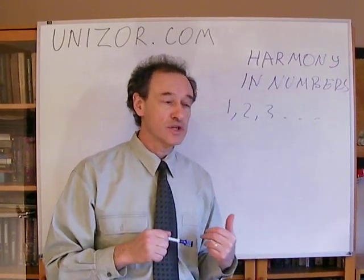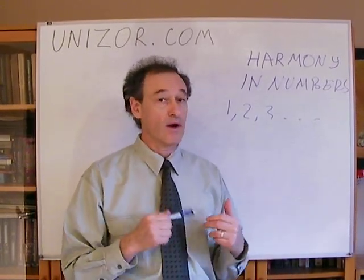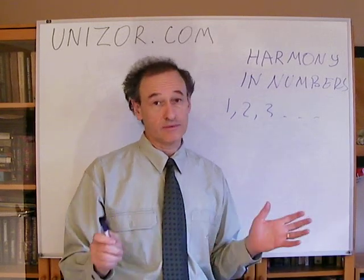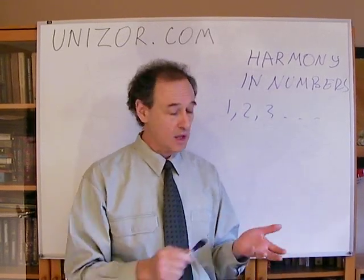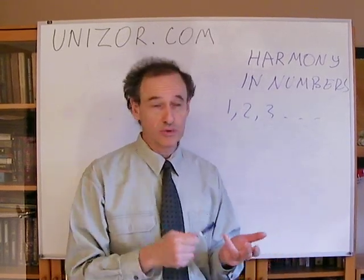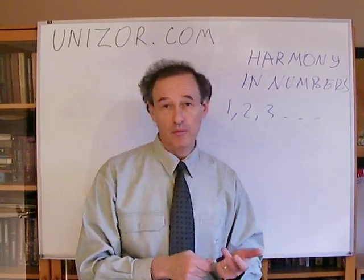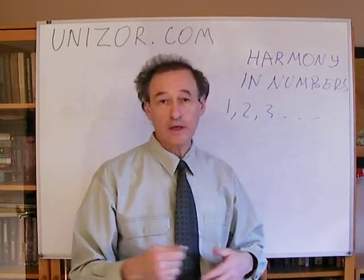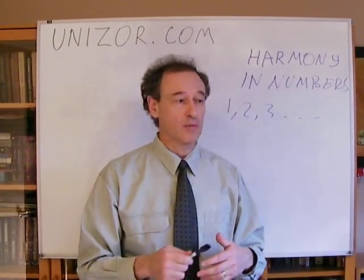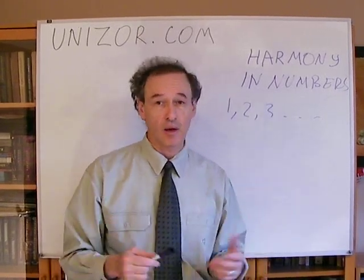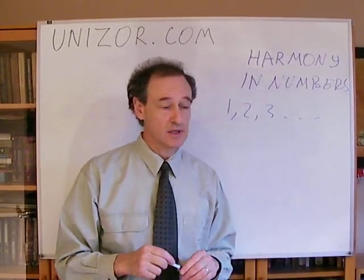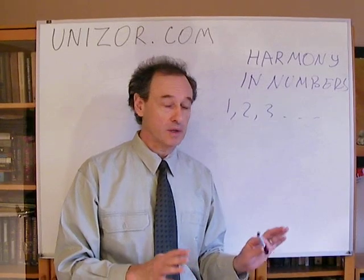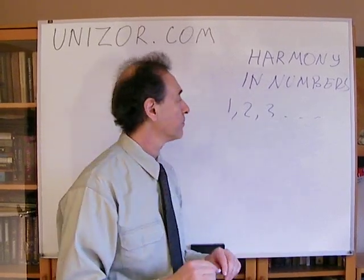Today, as far as numbers are concerned, we know lots of other numbers. We know zero, we know negative numbers, we know rational, irrational numbers, complex numbers, etc. But let's start one by one, step by step.